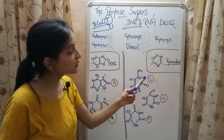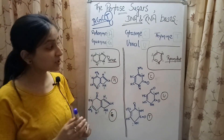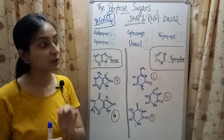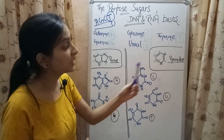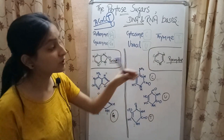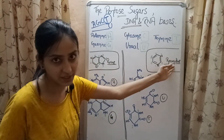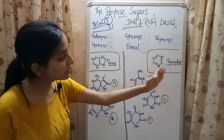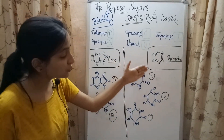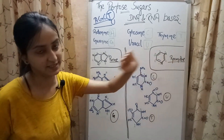Similarly, the structure of cytosine, uracil, and thymine consists of a 6-membered ring structure in which nitrogen is present at the 1st and 3rd positions, and this structure resembles that of an organic compound called pyrimidine. Because of this similarity in structures, cytosine, uracil, and thymine are known as pyrimidine bases.